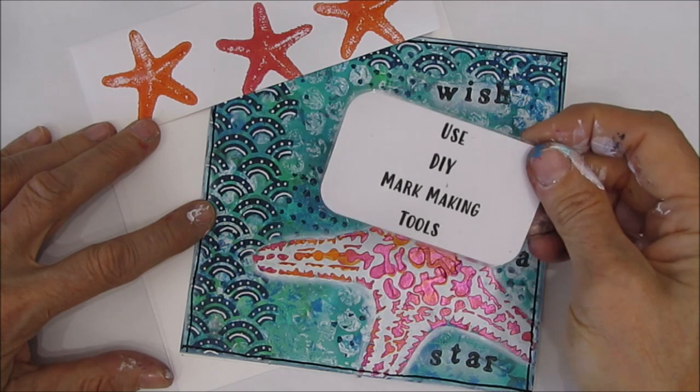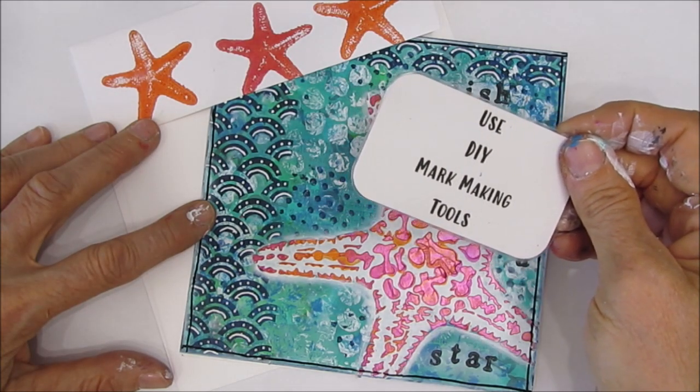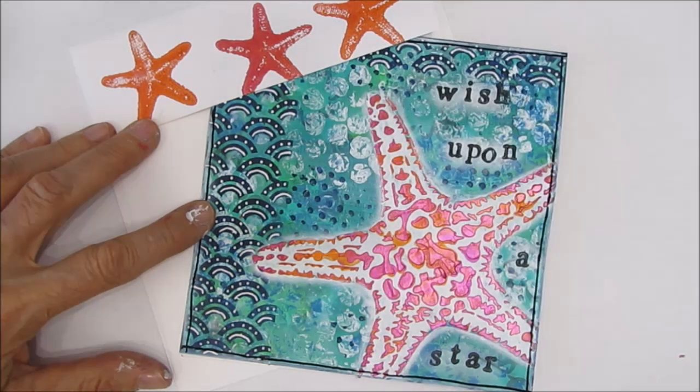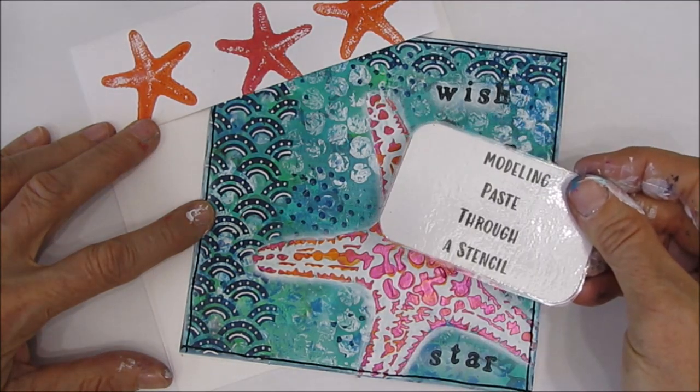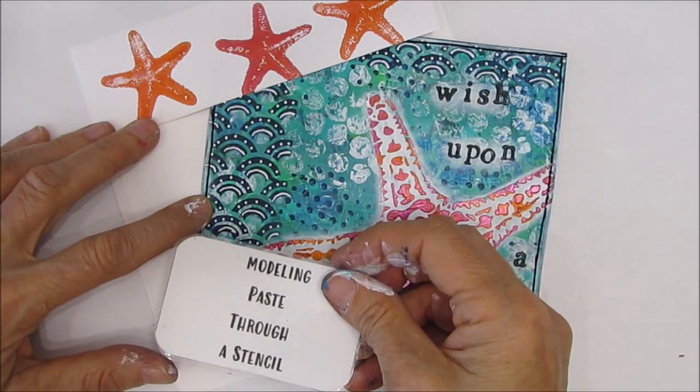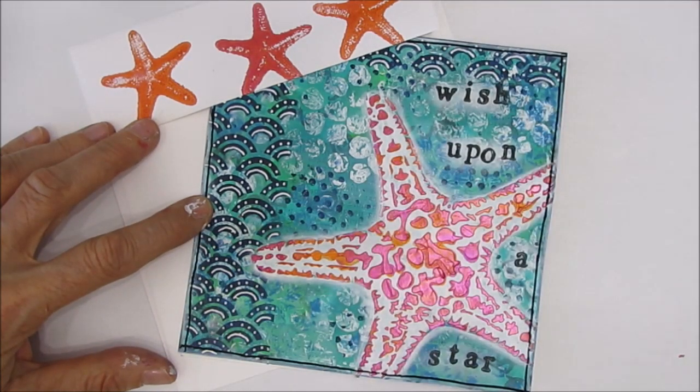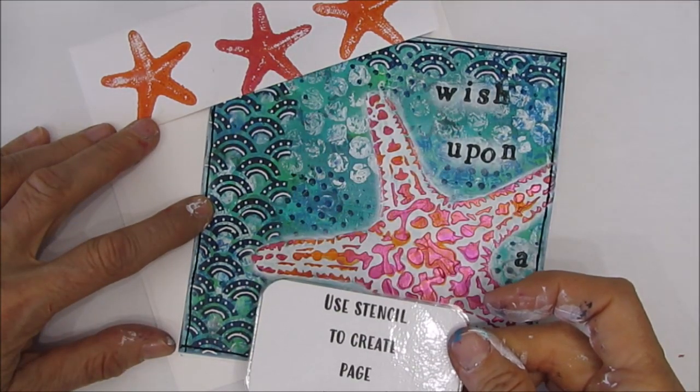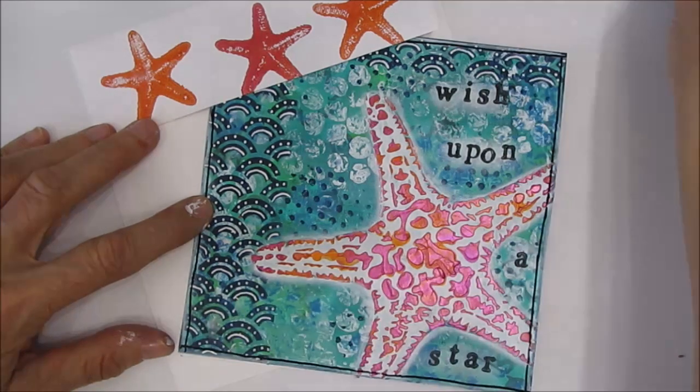I used some DIY mark-making tools—the bubble wrap and the shelf liner. I put the stencil butters, similar to modeling paste, through the stencil. I used the stencil to create a border or design element on the card.